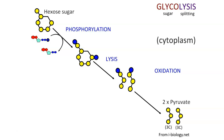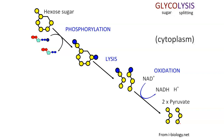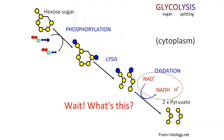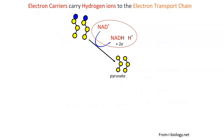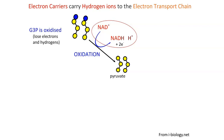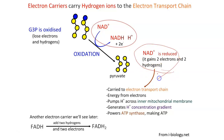These two G3P molecules are then converted into two pyruvates, each with only three carbons. During this conversion from G3P to pyruvate, NAD acts as an electron carrier and becomes NADH. The process is oxidation — G3P gives up the electron and becomes oxidized, while NADH receives the electrons and becomes reduced.